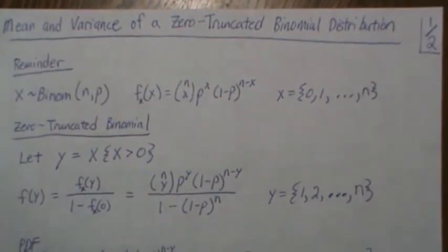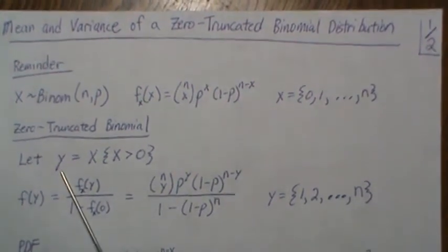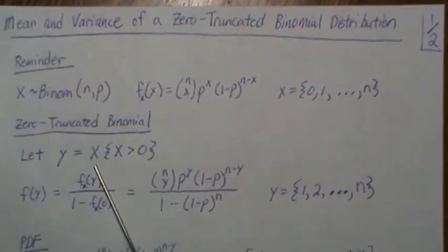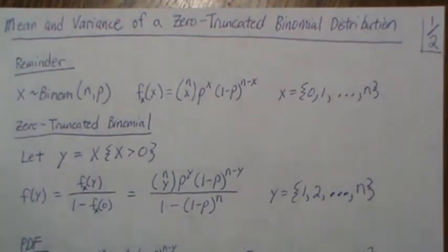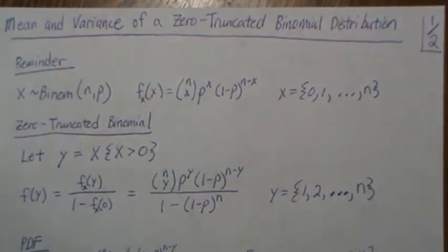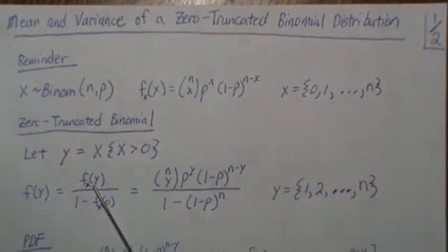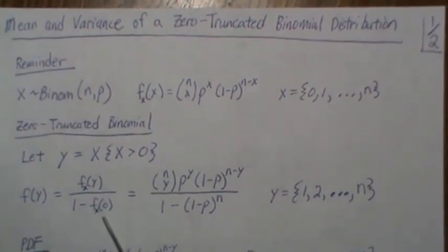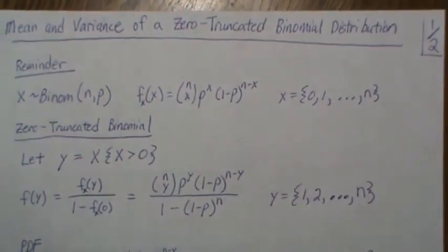Zero-truncated binomial, we're going to call it Y, equals X but only for X greater than zero, so the zero cases are removed. The density or probability mass function is the probability mass function for X divided by 1 minus the probability of X equals 0.